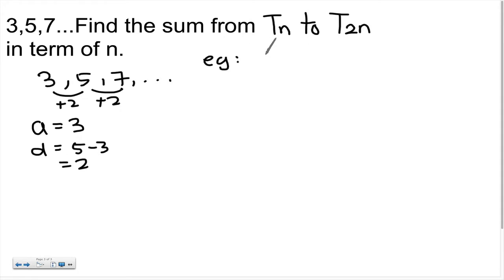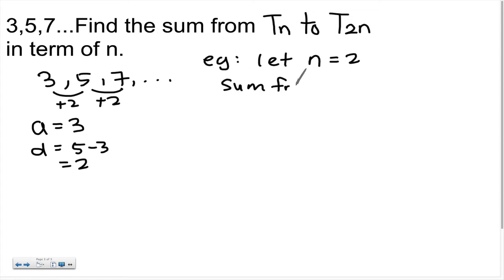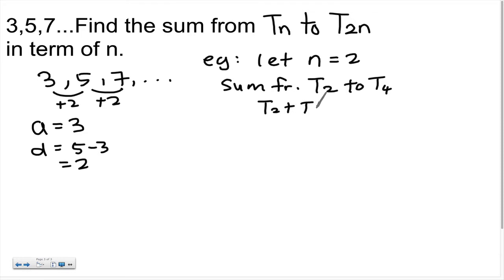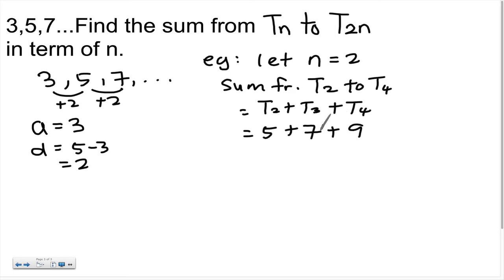For example, let n = 2. Then the question asks for the sum from T₂ to T₂ₙ = T₄, meaning T₂ + T₃ + T₄. We know T₂ = 5, T₃ = 7, and the next term T₄ = 9. So the sum is 5 + 7 + 9 = 21.